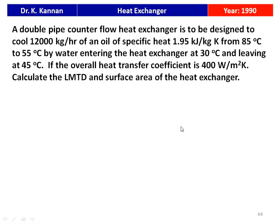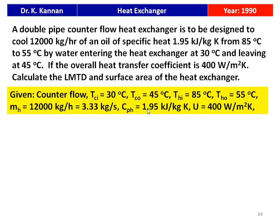The next question is from the 1990 question paper. A double pipe counter flow heat exchanger is to be designed to cool 12,000 kg/hr of oil with specific heat 1.95 kJ/kg·K from 85°C to 55°C by water entering at 30°C and leaving at 45°C. Overall heat transfer coefficient is 400 W/m²K. Given: TCI = 30°C, TCO = 45°C, THI = 85°C, THO = 55°C, MH = 12,000 kg/hr = 3.33 kg/s, CpH = 1.95 kJ/kg·K, U = 400 W/m²K.